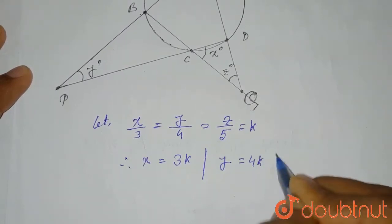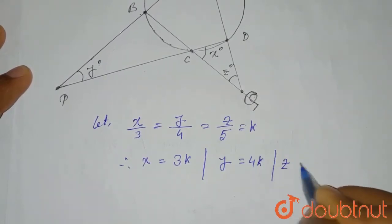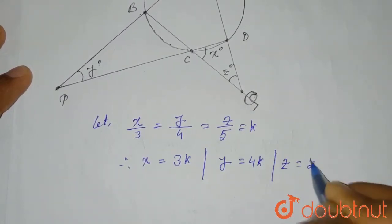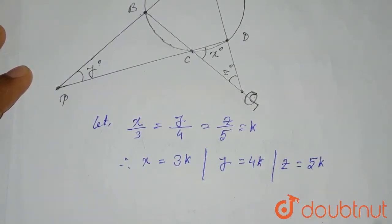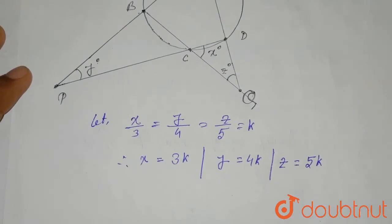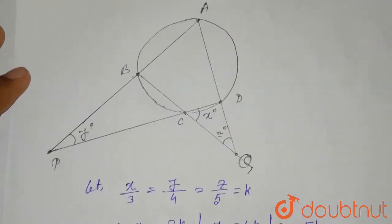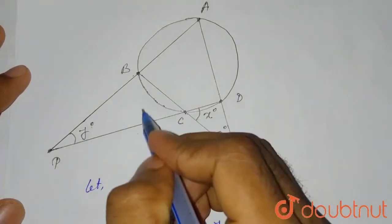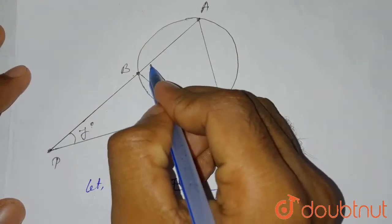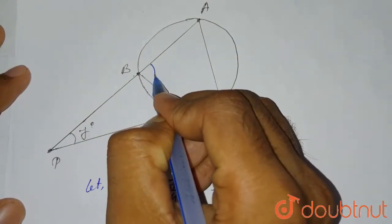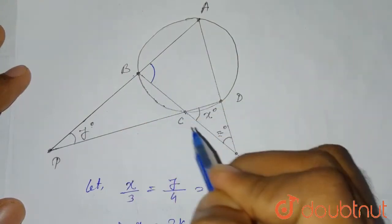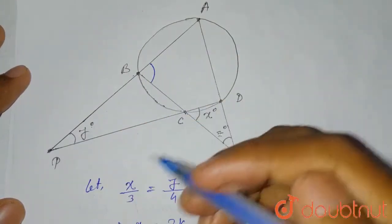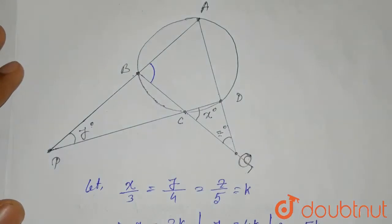Now we need to use a simple triangle property: the exterior angle of a triangle equals the sum of the two opposite interior angles.